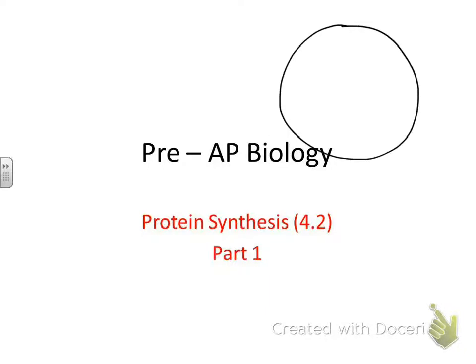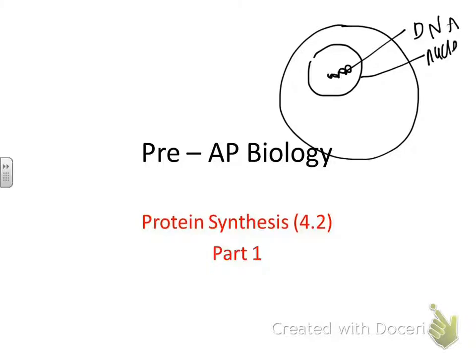From Unit 1 — there's your cell, there's your DNA. DNA is going to unzip and make a disposable copy of RNA. So DNA unzipped and made a disposable copy of RNA.